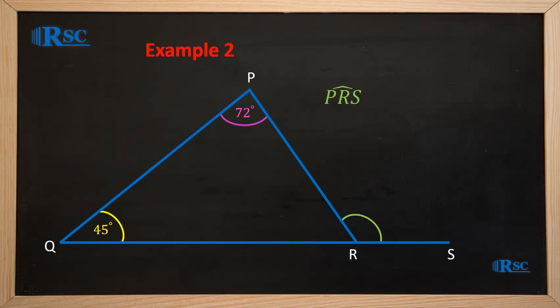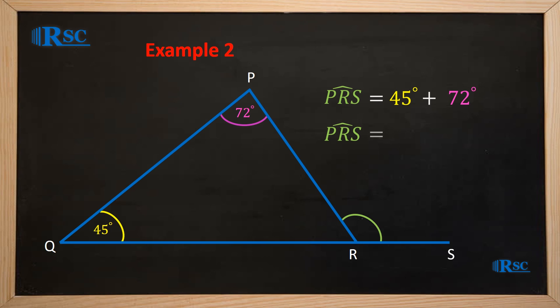Therefore, angle PRS is equal to 45 degrees plus 72 degrees, which gives angle PRS equal to 117 degrees.